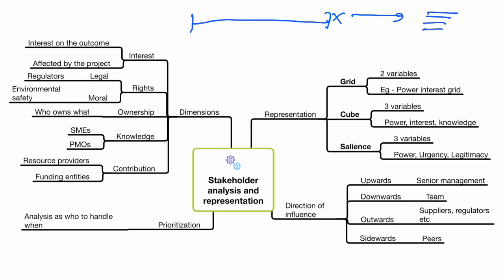Think of it this way: if a highway is being built or closed, whoever will be affected — customers who paid money, people working on it, people displaced — all of those people are your stakeholders. This is the easiest way to identify stakeholders.